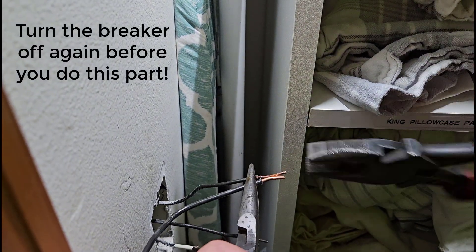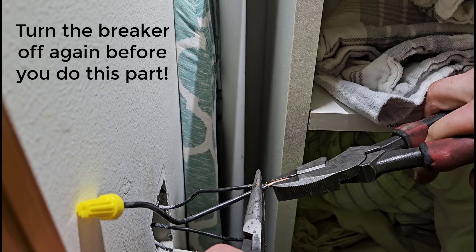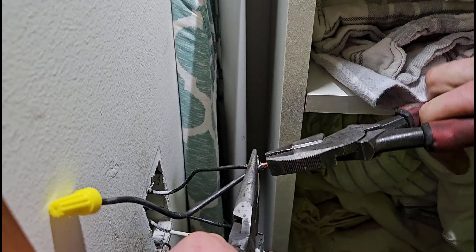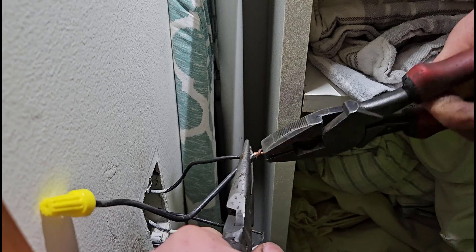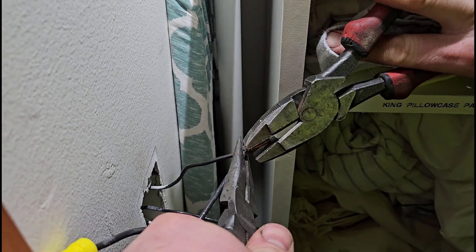So the proper way to do this is to twist together the wires before you put the wire nut on. Don't just try to hold them parallel to each other and twist the nut on all at the same time.